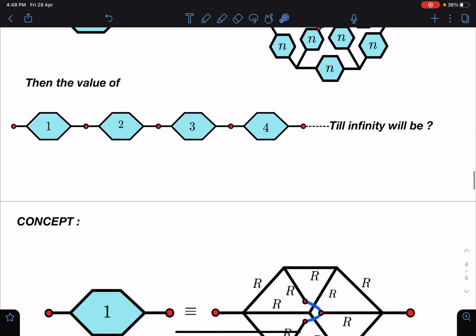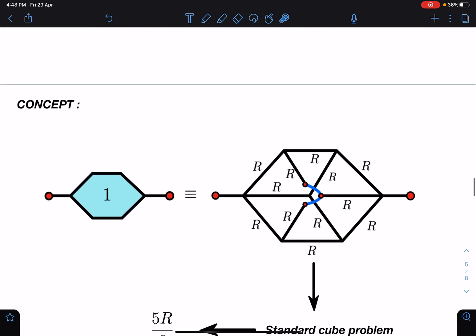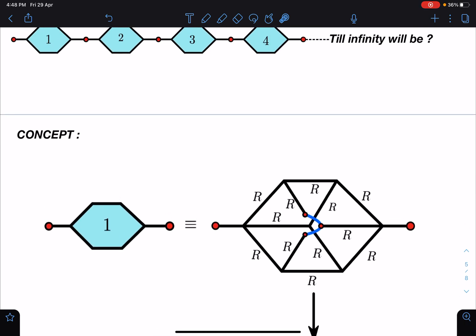So let's solve this problem now. The concept-wise, you can see here the first grid when 1 is written, all these resistances in this hexagon are R, R, R, R. But if you see this carefully, I think to some people it will strike immediately that this is nothing but a cube.